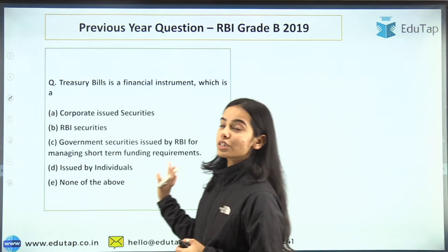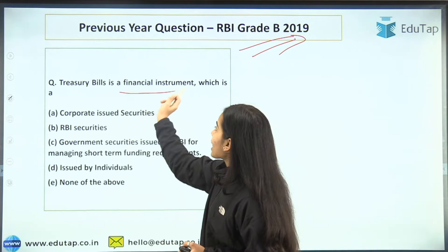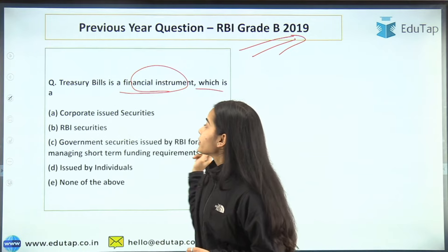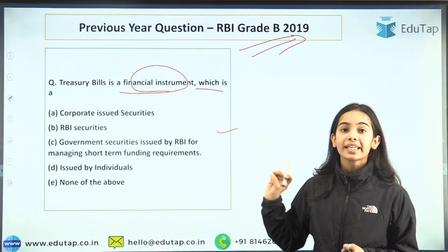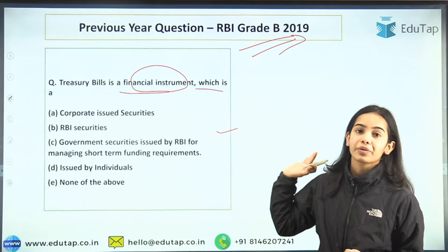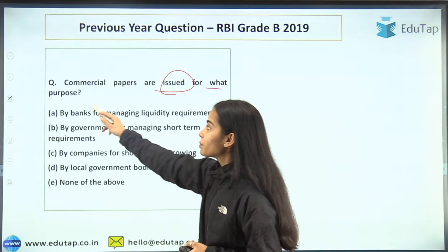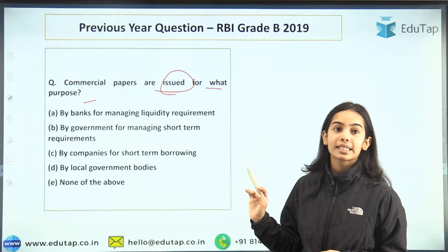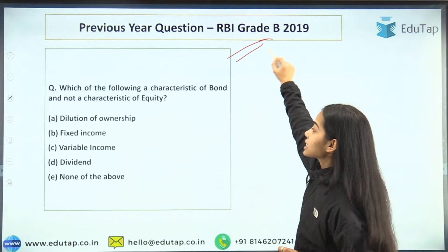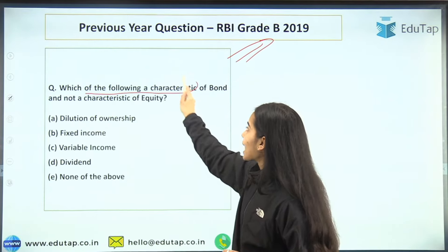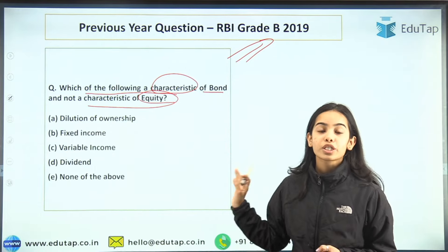The first question is from RBI Grade B 2019: treasury bills is a financial instrument which is a — this you can surely answer by the end of the session as it is a very direct question. The second question is: commercial papers are issued for what purpose? Then again in RBI Grade B 2019, the question about which of the following is a characteristic of bond and not a characteristic of equity was asked.